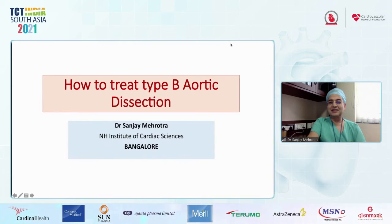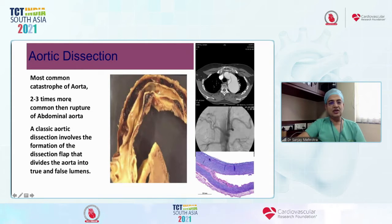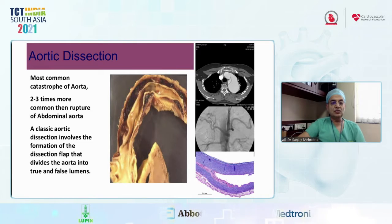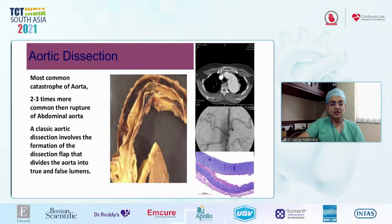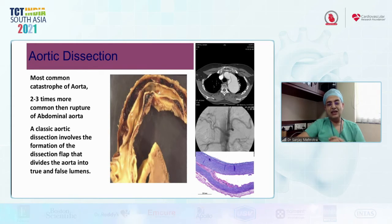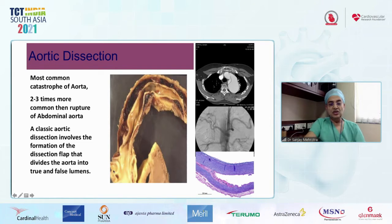My topic is how to treat type B aortic dissection. As all of you know, aortic dissection is the most common catastrophe of the aorta — it is two to three times more common than ruptured abdominal aortic aneurysm. Classic aortic dissection causes formation of a dissection flap in the media, causing separation of the aorta into two lumens: the true lumen and the false lumen, which contains thrombus.